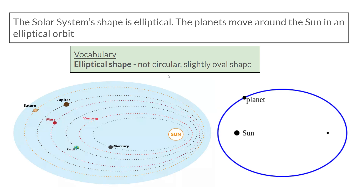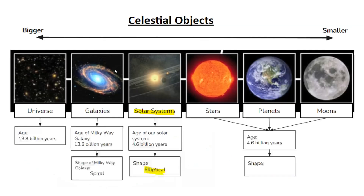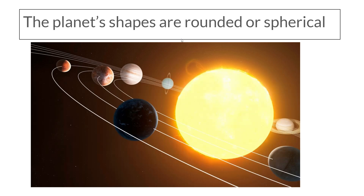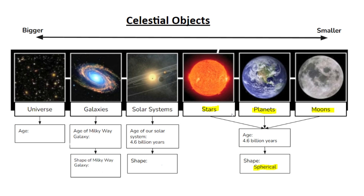The solar system's shape is what we call elliptical, and the planets move around the sun in an elliptical orbit. Elliptical means something that's not circular but slightly oval — the sun is not at the center, it's kind of on the side of the orbits. For our stars, planets, and moons, they have rounded or spherical shapes — they're not circles, they're spheres. Make sure you know all the dates and the shapes.